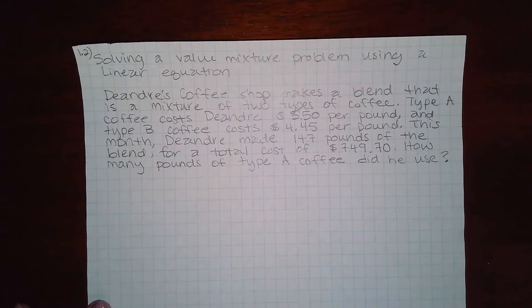This month, D'Andre made 147 pounds of the blend for a total cost of $749.70. How many pounds of type A coffee did he use?